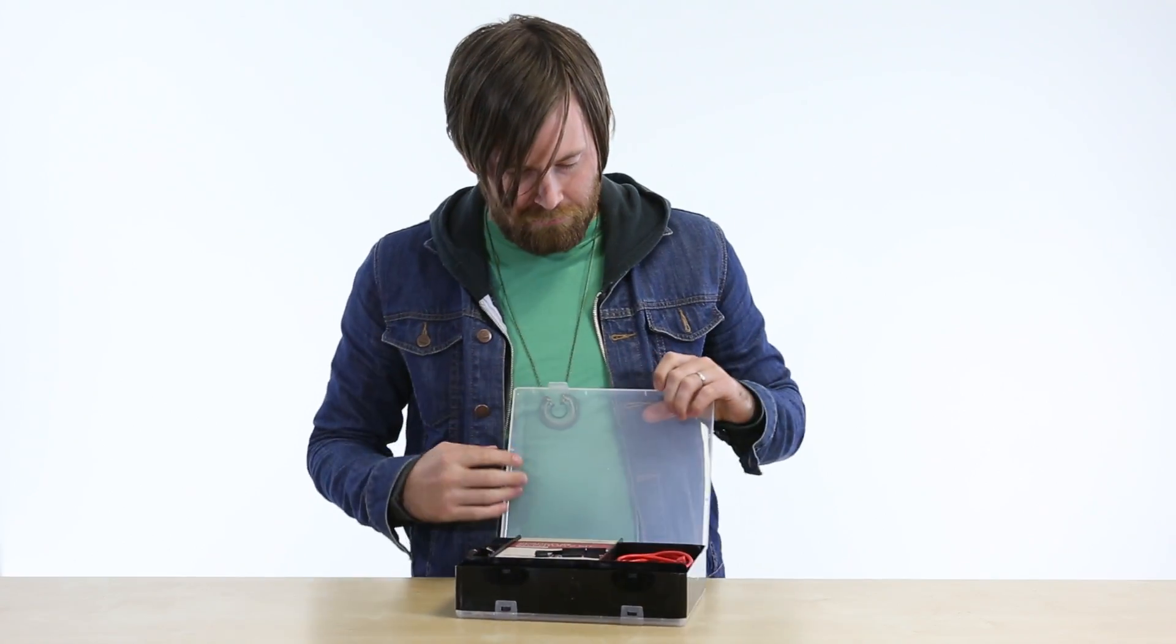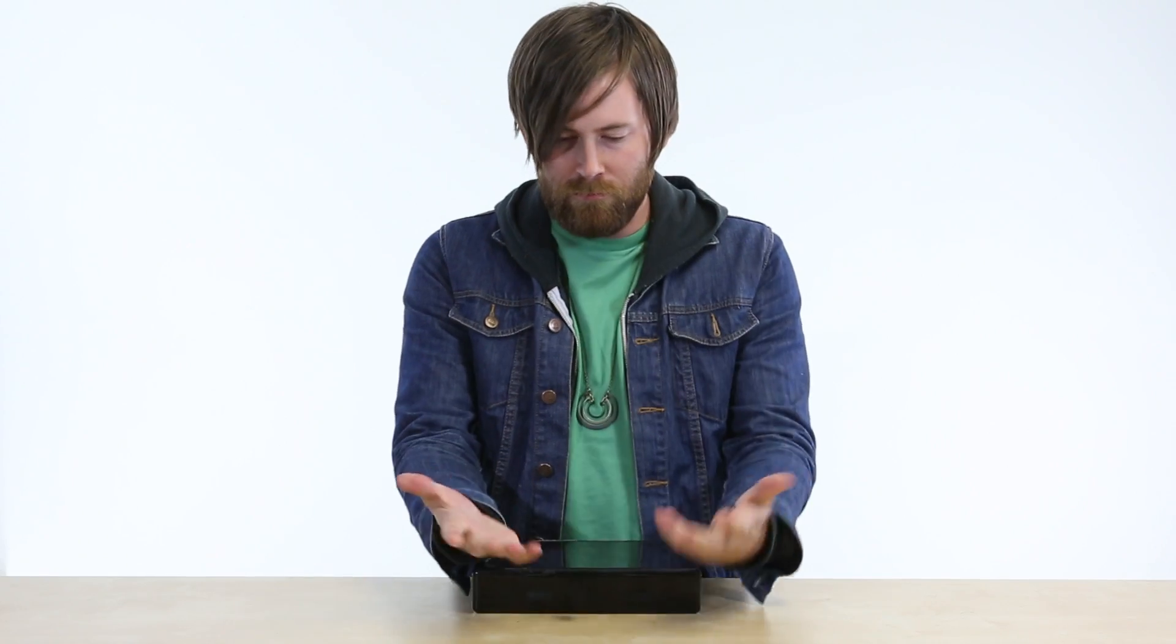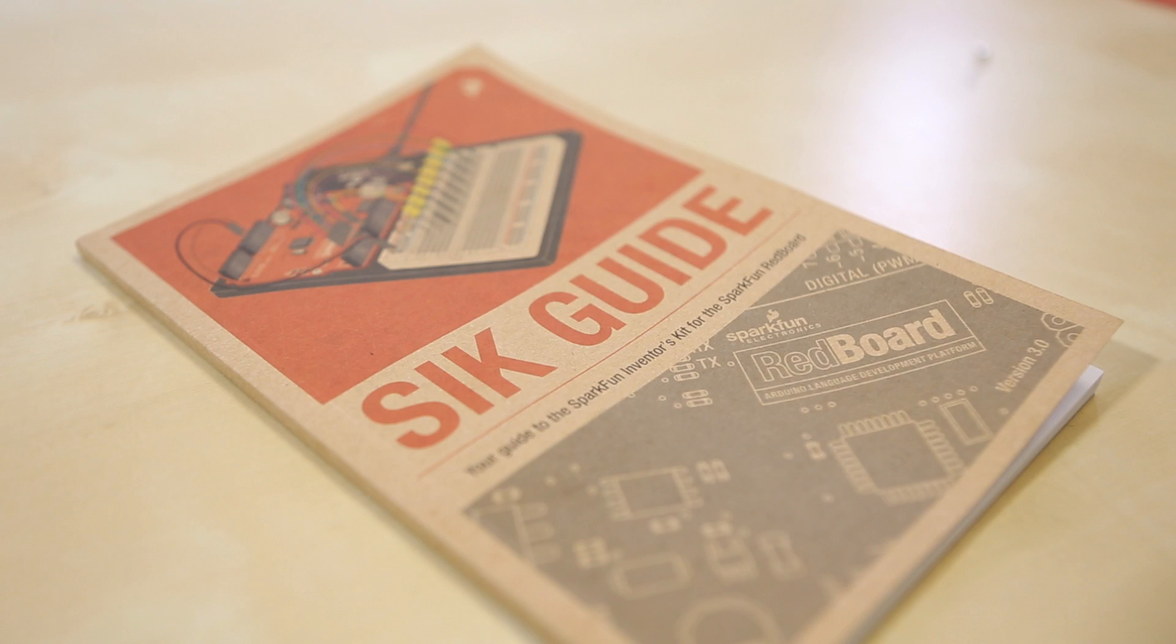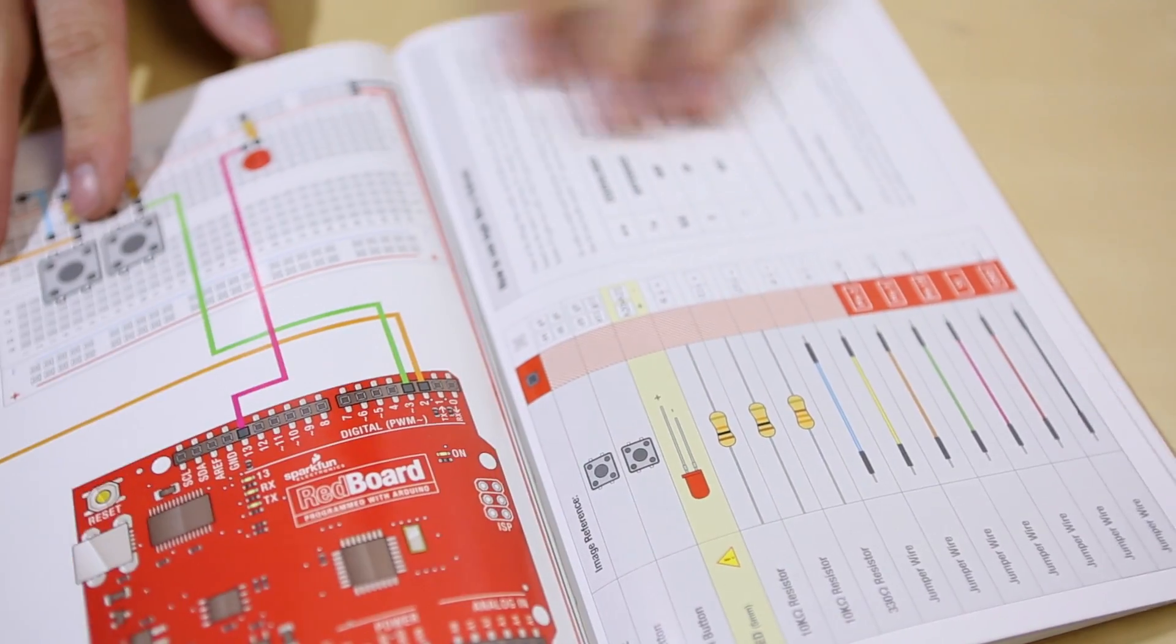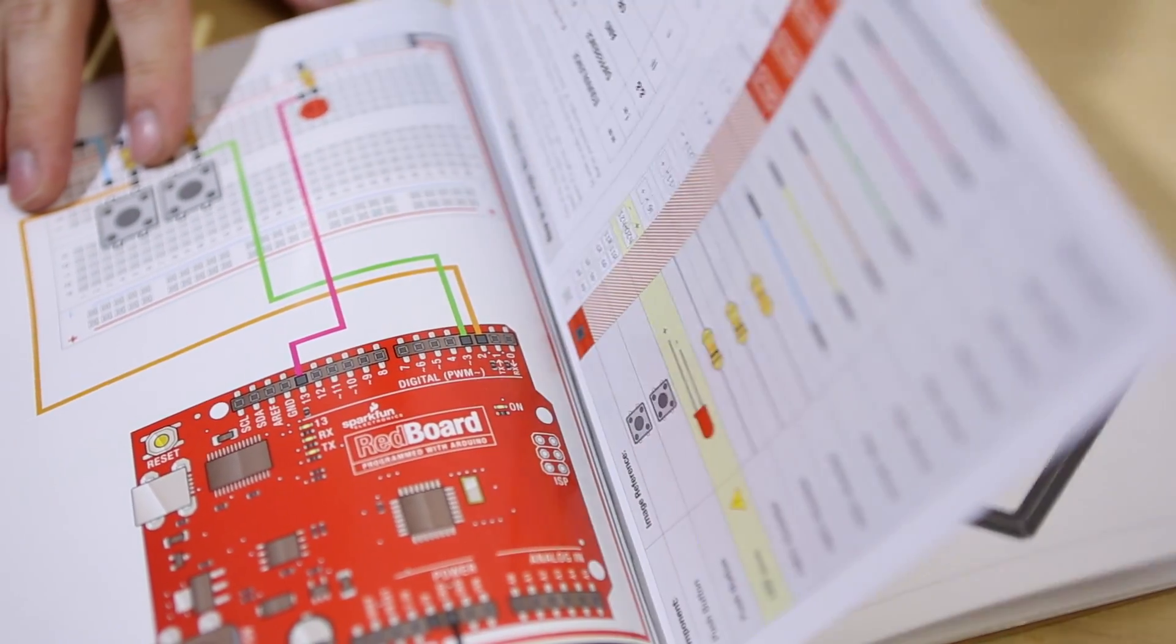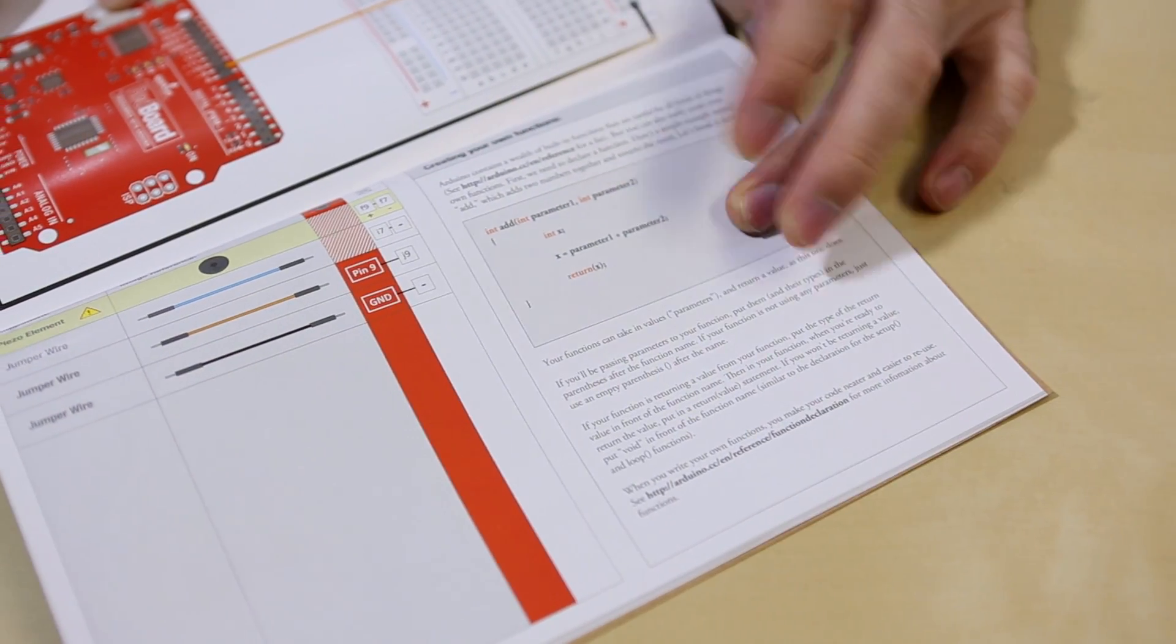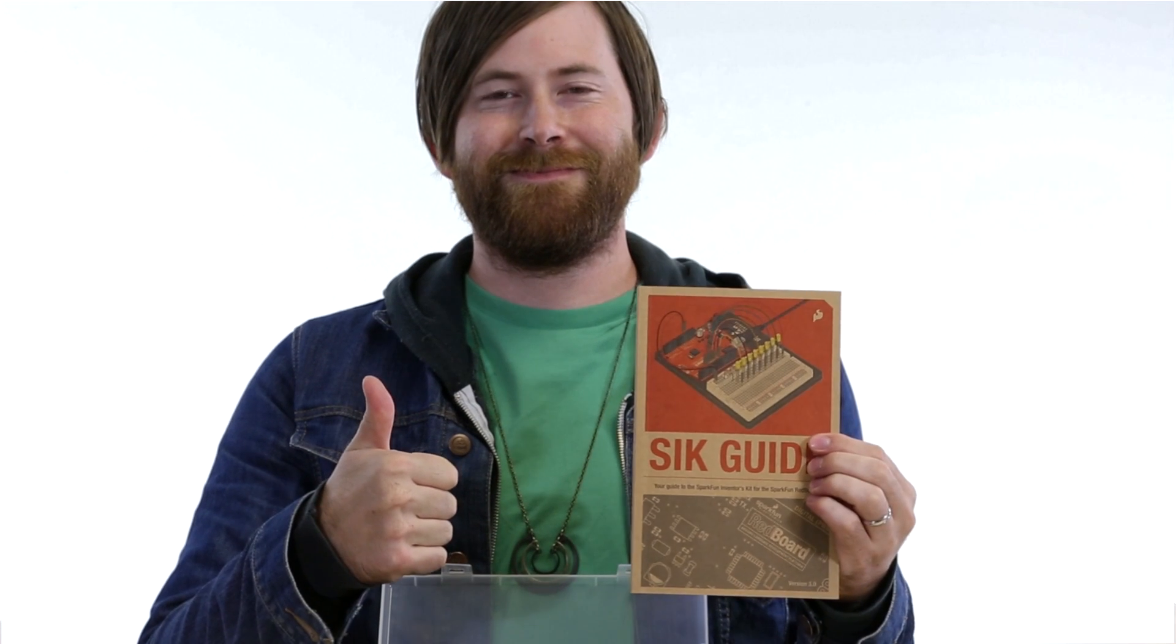The new plastic case is much more durable than previous models. The full color SIK guidebook contains step-by-step instructions for how to connect each circuit with included parts. Full example code is provided and explained and even includes troubleshooting tips if something goes wrong.